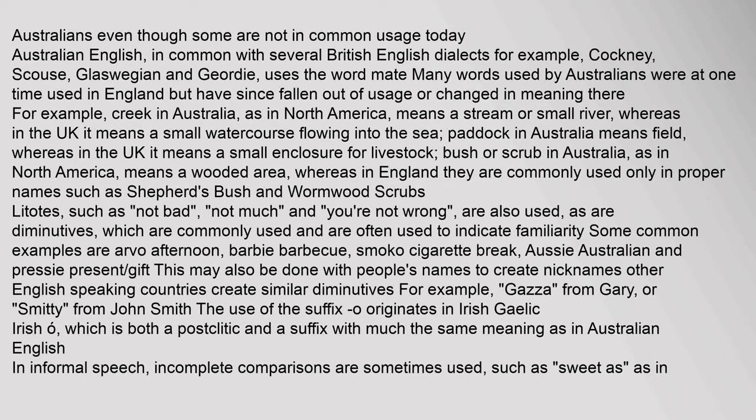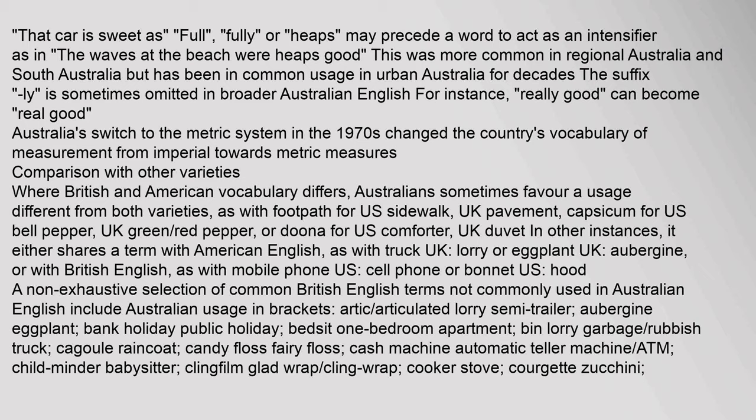'Full', 'fully', or 'heaps' may precede a word to act as an intensifier, as in 'the waves at the beach were heaps good'. This was more common in regional Australia and South Australia but has been in common usage in urban Australia for decades. The suffix '-ly' is sometimes omitted in broader Australian English; for instance, 'really good' can become 'real good'. Australia's switch to the metric system in the 1970s also changed the country's vocabulary of measurement from imperial towards metric measures.